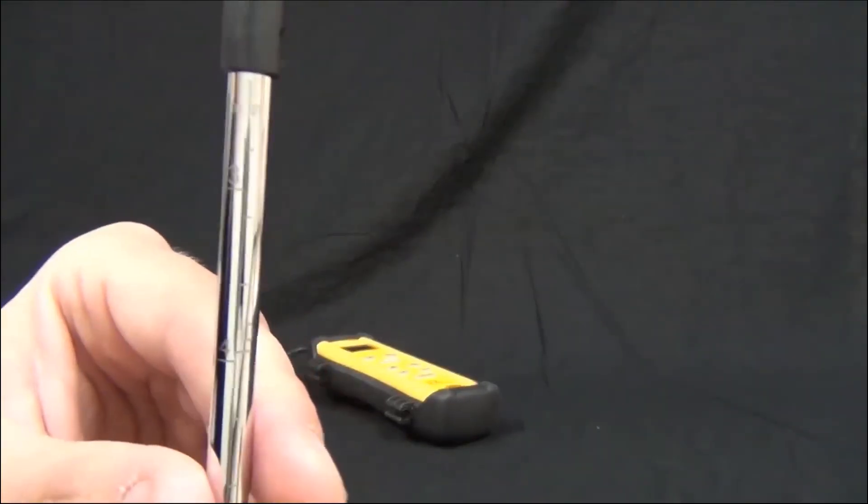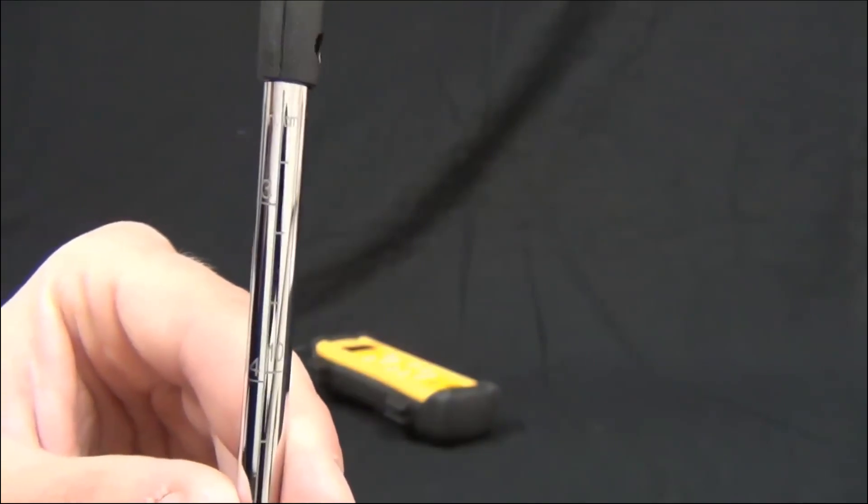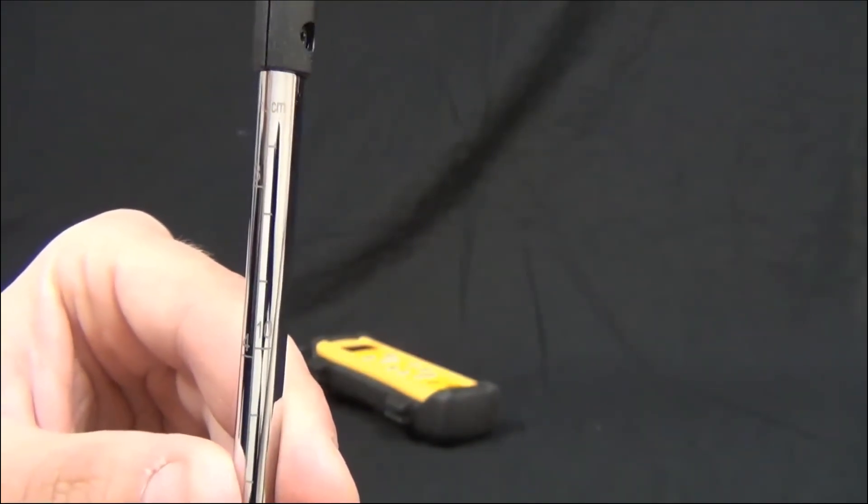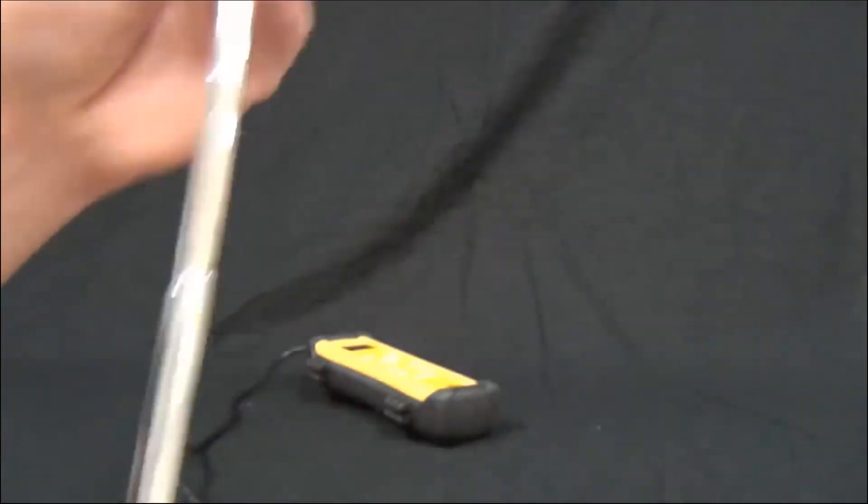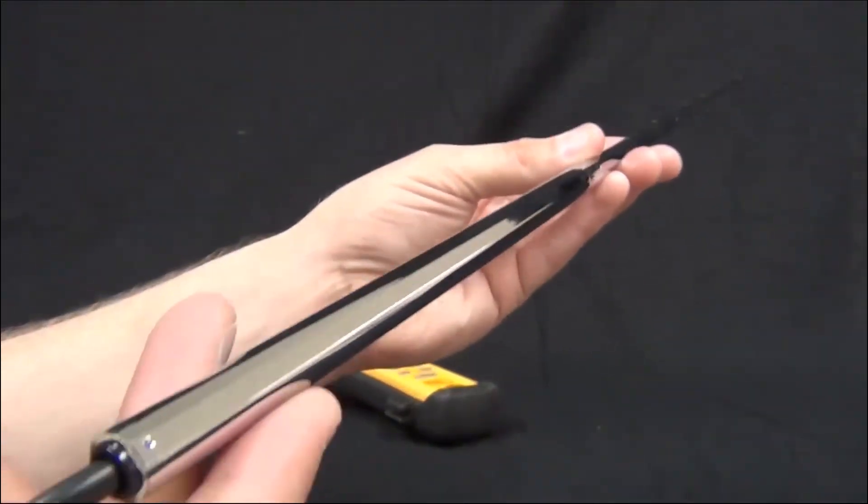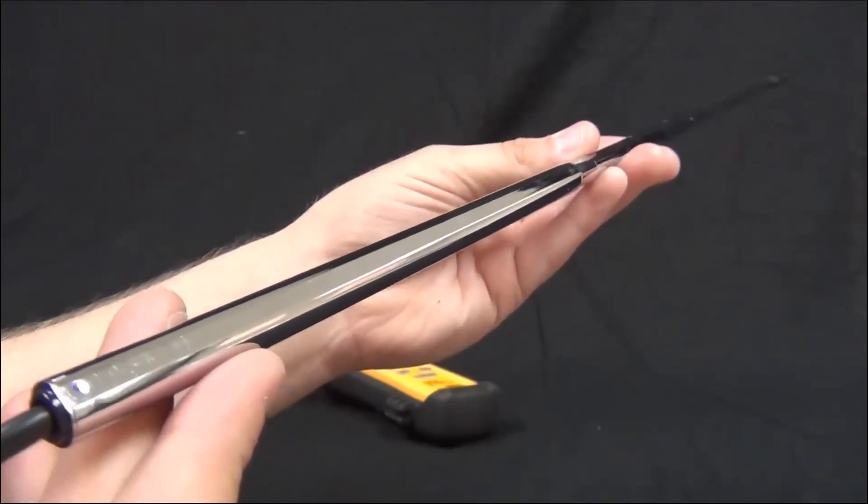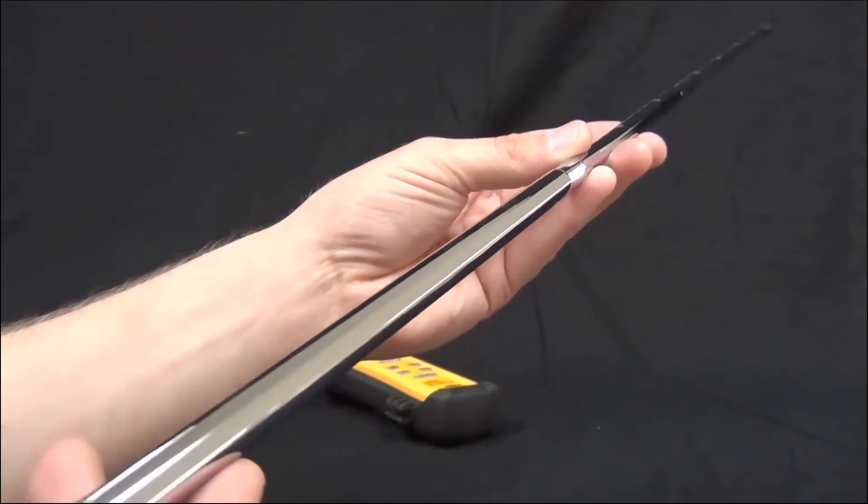Now other features of the wand, it has etchings on the side. You can see that three and four to let you know that you're three or four inches into the duct. This is a telescoping wand, so it goes all the way to 38 inches. And this allows you to get inside any duct size.